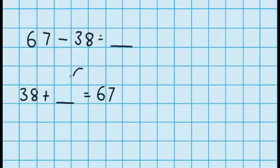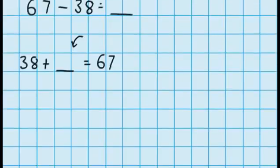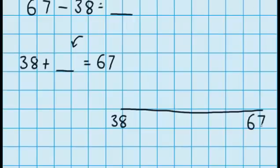So now we can use one of our addition strategies to try and work out what that number will be. Well I'm going to use a number line. On my number line I'm going to write 38 and at this end I'll write 67. Now my first jump I'm going to jump from 38 up to a tidy number, so I'm just going to do a little jump. I'm going to jump up to 38 plus 2 and that gets me to 40.